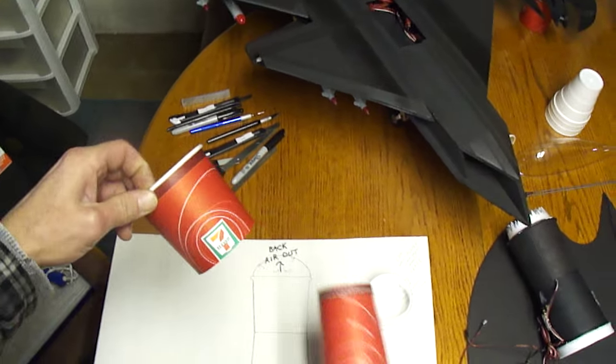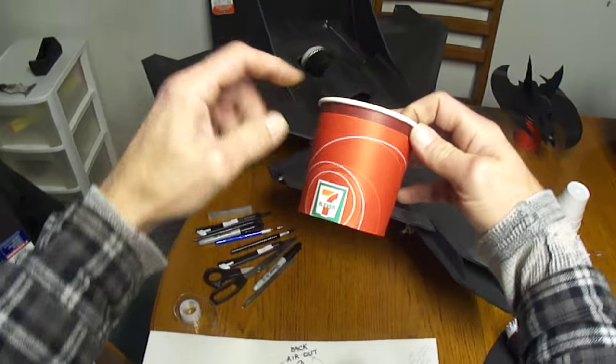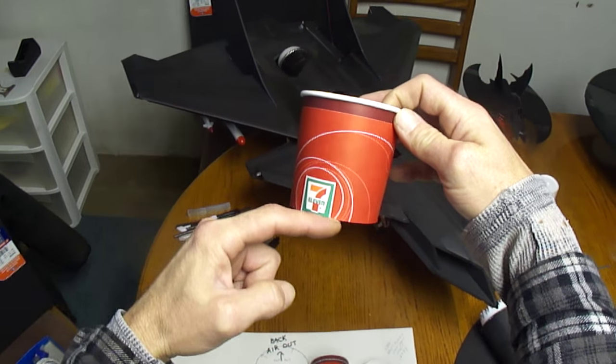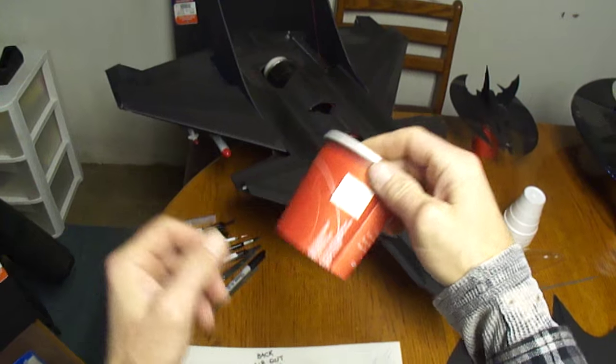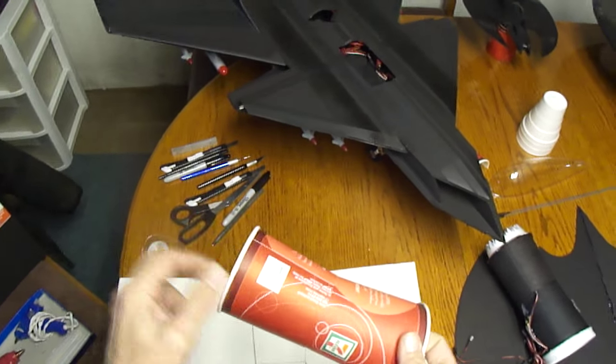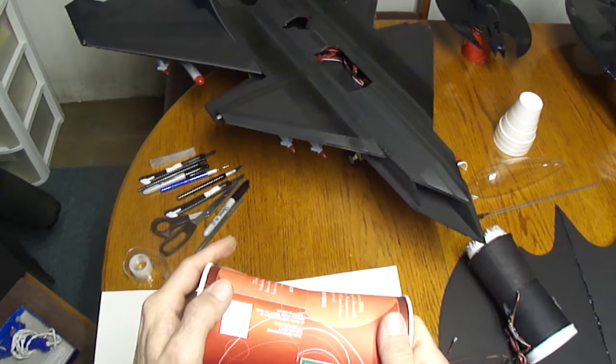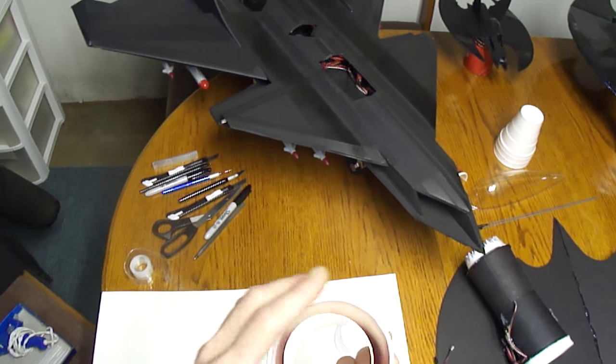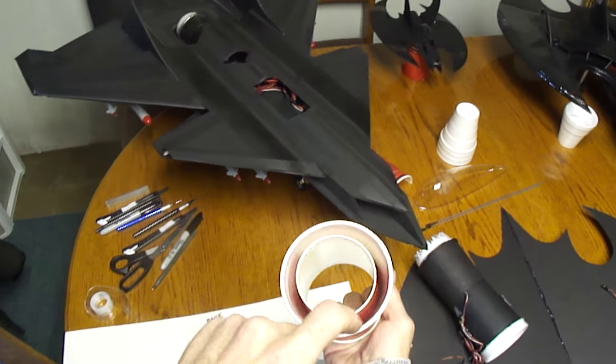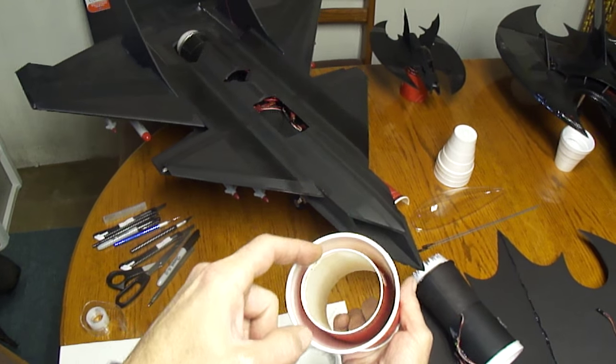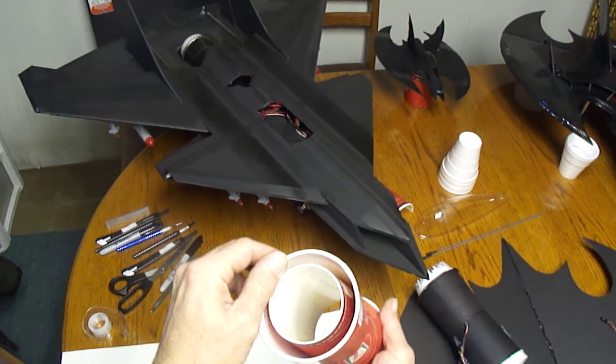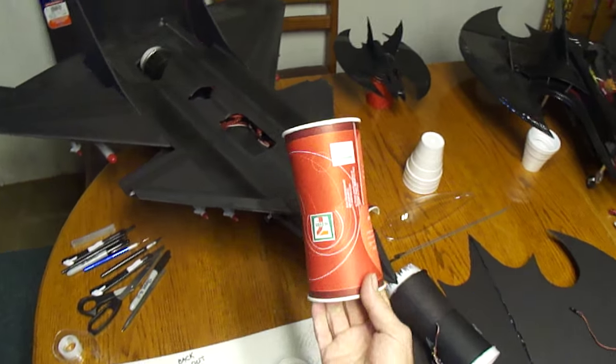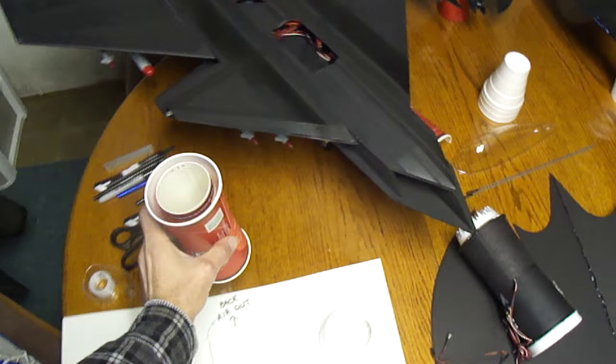So again, you'll want to measure down three and a half inches from the rim of the cup down. Mark a line. And then cut off the bottom of the cup. That'll give you the perfect size you need. And of course, your 70mm afterburner ring will go on the inside. Just a really cool way to put the afterburner ring on there.